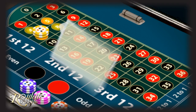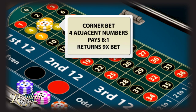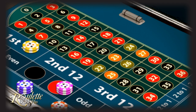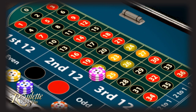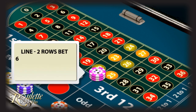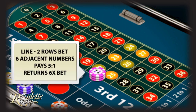Corner bet — the corner bet is on four adjacent numbers; the chances of winning are 1 in 8. Line bet — the line bet is on six numbers over two rows; the chances of winning are 1 in 5.